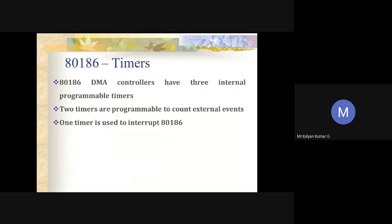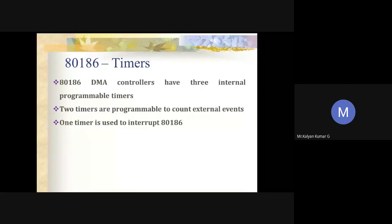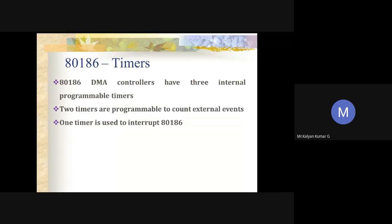The next additional feature in 80186 is the programmable timer. The 80186 microprocessor has three internal 16-bit programmable timers. Two of these are highly flexible — they can be programmed to count external events and are connected to external pins. They can be used to count or time external events or generate non-repetitive waveforms. The third timer is not connected to any external pins and is used to interrupt the 80186 after a programmed interval of time.